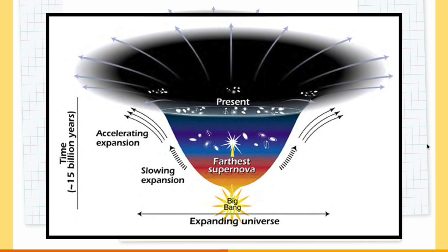In the graph, you can see the Big Bang on the x-axis along with the rate of expansion of the universe. On the y-axis, you can see time, with the whole axis representing approximately 15 billion years.